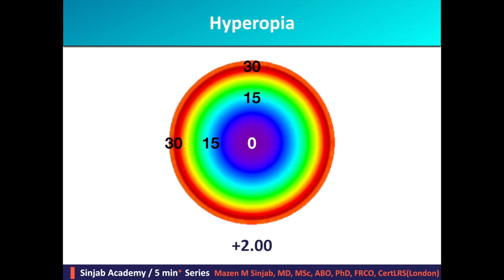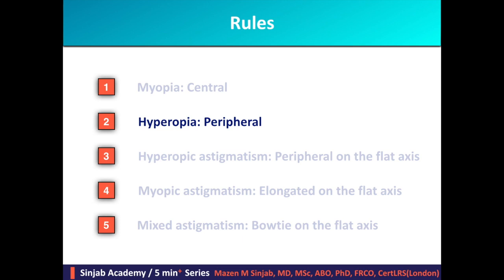This is the hyperopic ablation profile to correct plus two diopters sphere. It is an annular ablation profile in which the central ablation depth is zero, while the maximum ablation depth is peripheral. If we multiply plus two by 15 microns it will be 30 microns at the periphery. So rule number two: in hyperopia the ablation profile is peripheral, and whatever the hyperopic amount of correction, the central ablation depth will be zero.